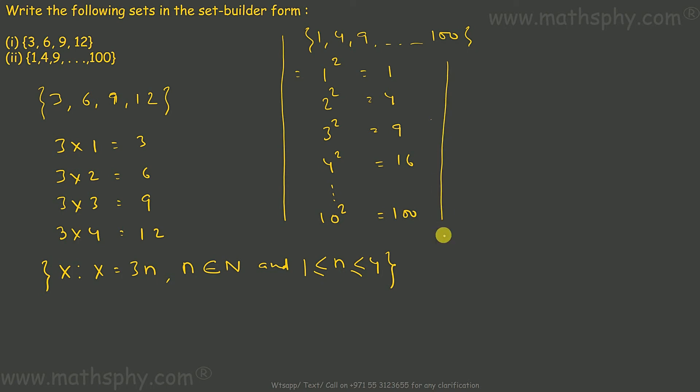So if I write this way, the element X is in such a way that X is equal to n square, and n is also a natural number, and n falls between, I'll write n is more than equal to 1, less than equal to 10.